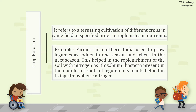What is crop rotation? It refers to alternating the cultivation of different crops in the same field in a specified order to replenish soil nutrients. For example, farmers in northern India used to grow legumes as fodder in one season and wheat in the next. This helped replenish the soil with nitrogen, as rhizobium bacteria present in the nodules of the roots of leguminous plants helped in fixing atmospheric nitrogen.